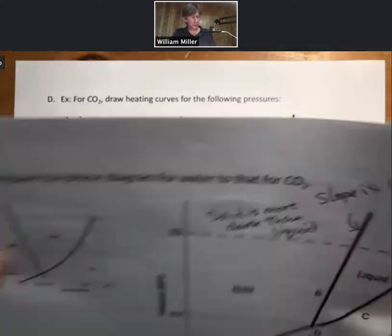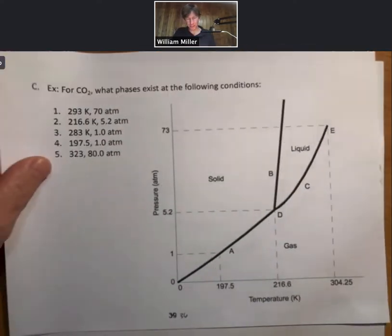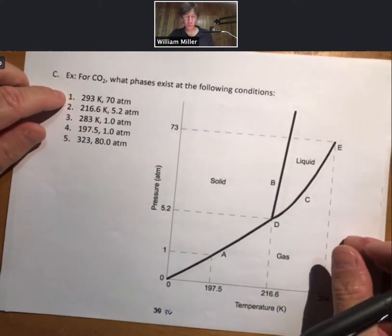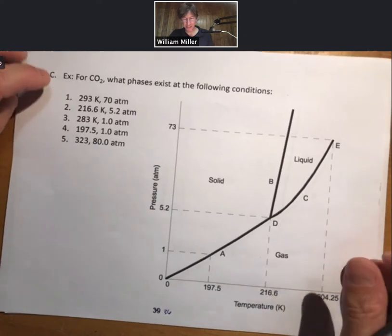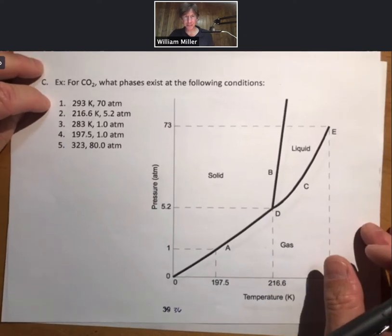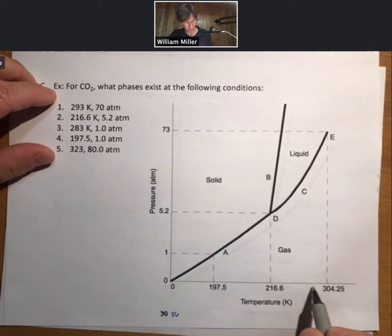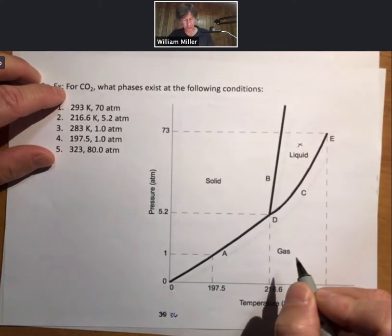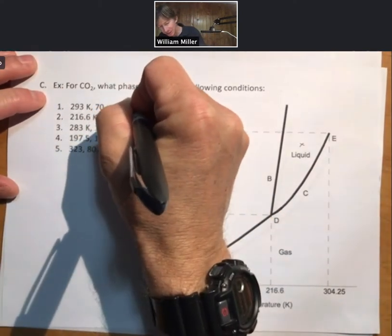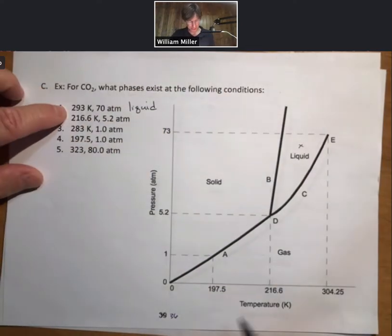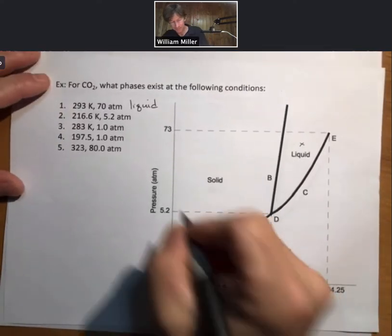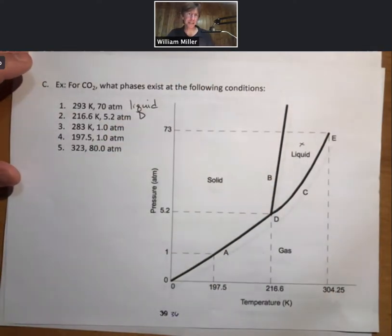A couple questions we can get about supercritical fluids: one is based on the temperature-pressure combination, where are we, what phases exist? Let's run through a couple of examples here. 293 kelvin would be somewhere in here, 70 atmospheres go up to 70 atmospheres, it will be somewhere around right there. That'll be in the liquid phase. 216.6, 5.2, that's going to be point D, which is the triple point.